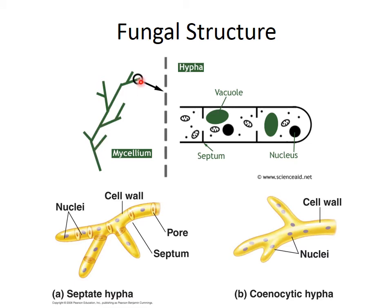Here's the mycelium — a web made up of hyphae. In close-up, each individual cell has a nucleus and vacuoles. This specific type is called a septate hypha. A septum is like a little wall separating the cells, and each septum has a pore in it so nutrients and fluids can still move between cells. A coenocytic hypha looks pretty much the same but does not have those septa between cells.